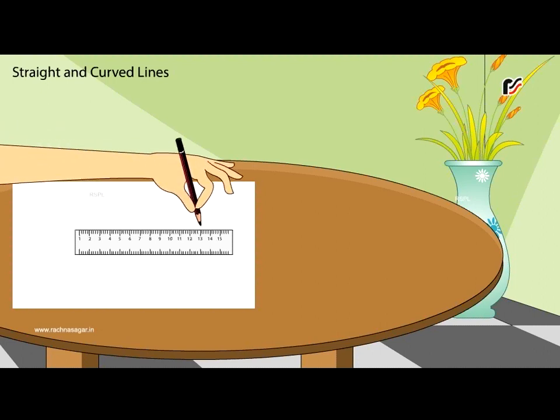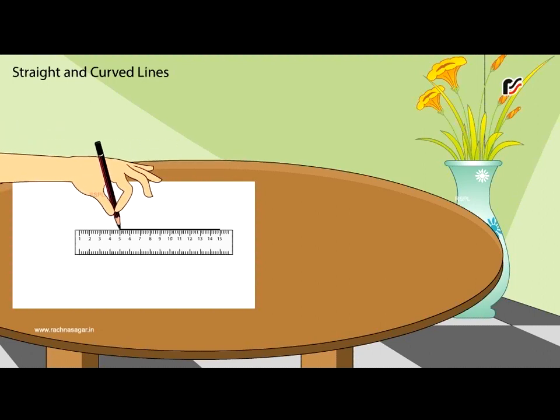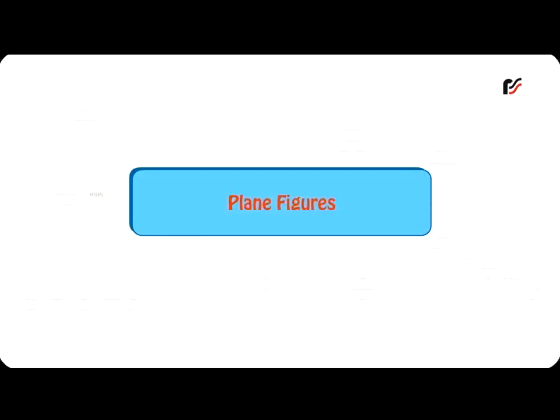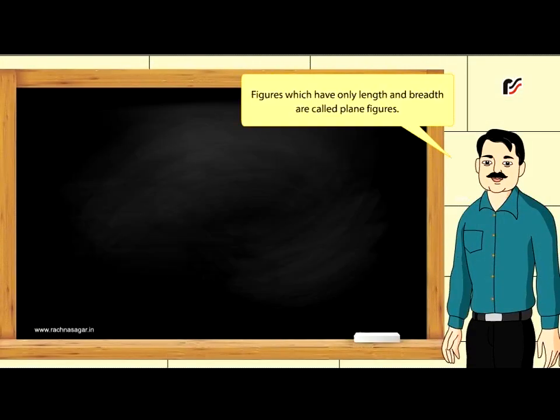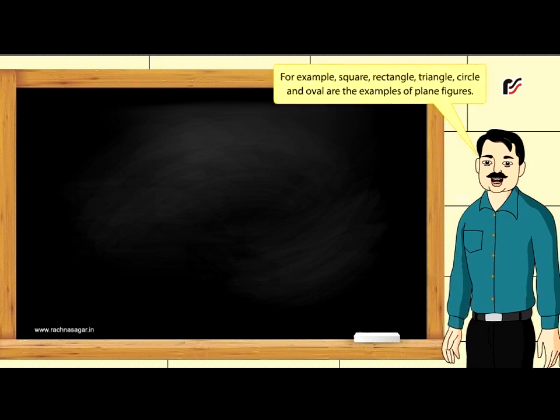We can draw a straight line by using a ruler. Plain Figures. Figures which have only length and breadth are called plain figures.